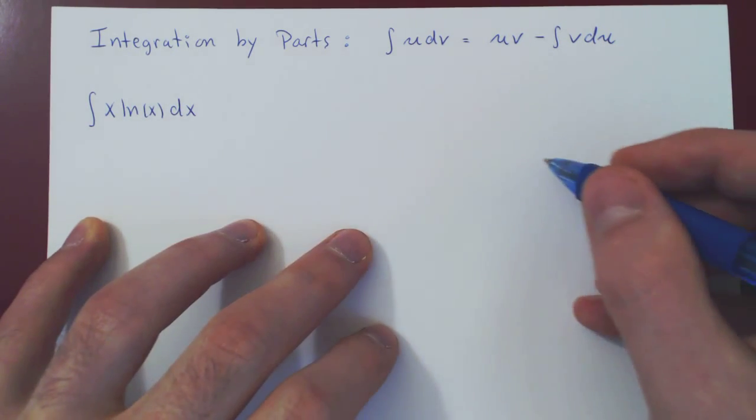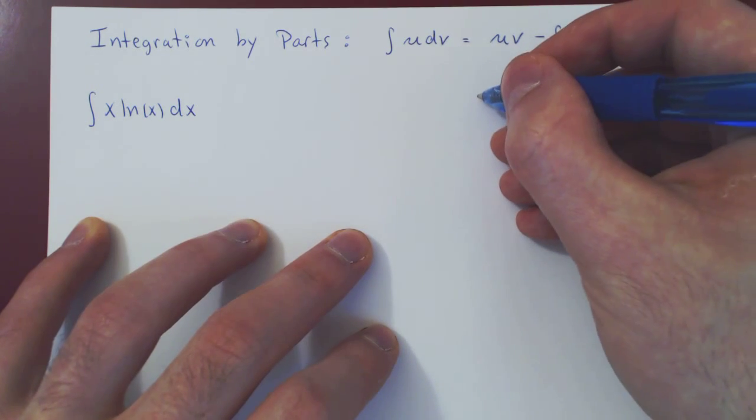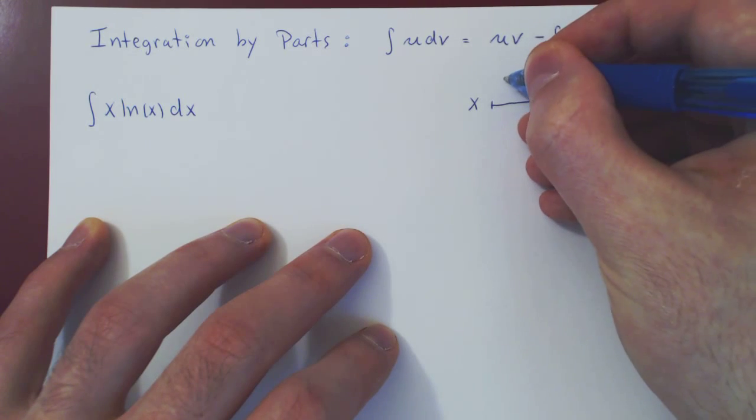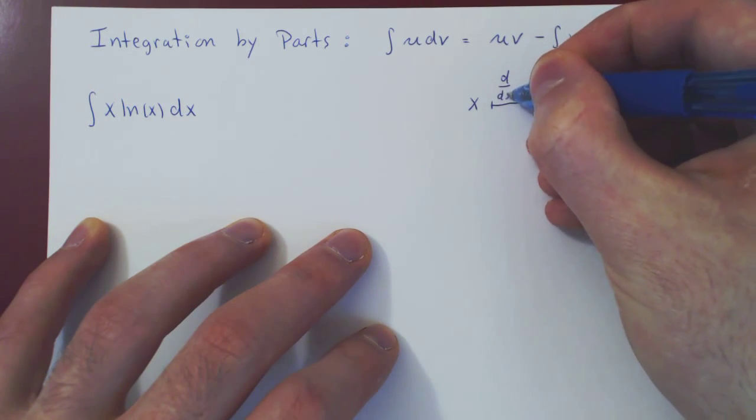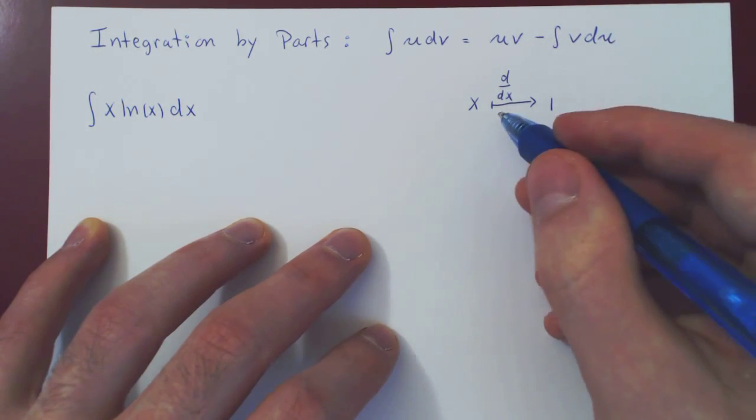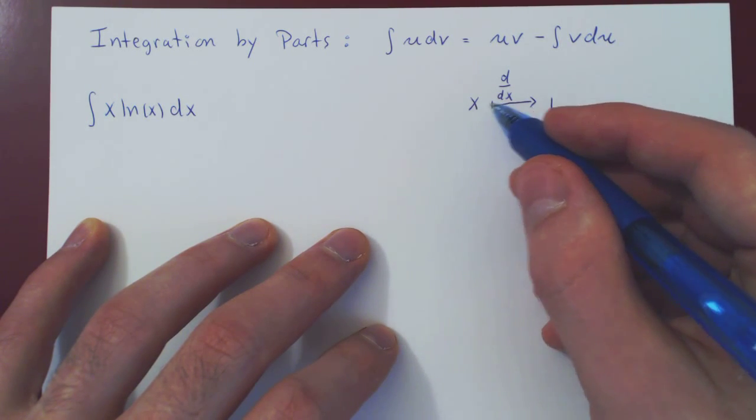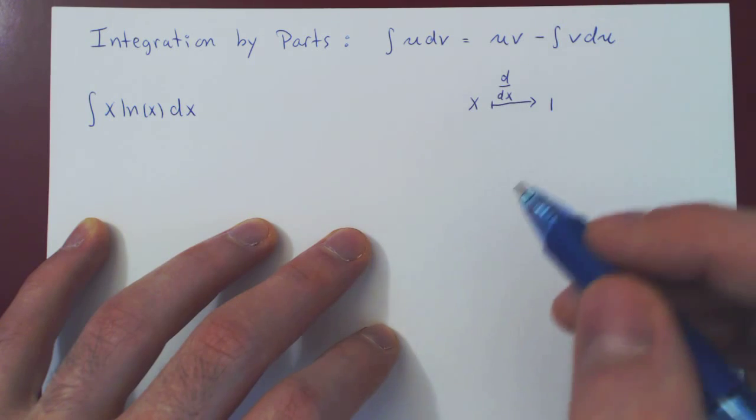So let's see what I mean by this. We have the function x. If we differentiate x, we get 1. So we do get a simplification, right? Going from the equation y equals x to y equals 1 is a simplification.